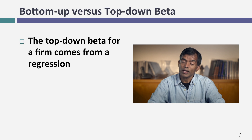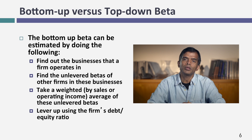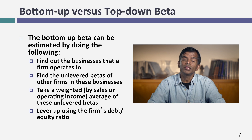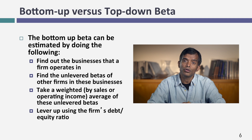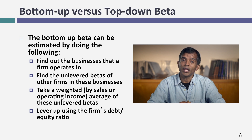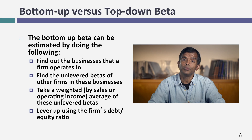Let's assume a company is in two businesses: steel and chemicals. Here's how I'm going to estimate betas. I'll find as many publicly traded steel companies and chemical companies as I can — publicly traded because I can get regression betas for each of them. Then I'll average the betas across all steel companies and all chemical companies to get an average regression beta for each sector. Since that regression beta is a levered beta, I'll take the average debt-to-equity ratio for each sector and unlever the beta, getting an unlevered beta for the steel business and for the chemical business.